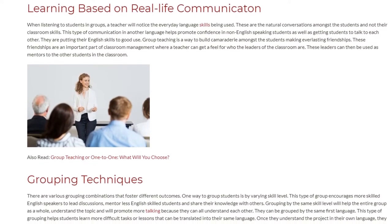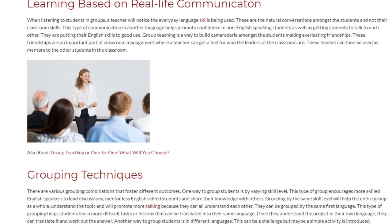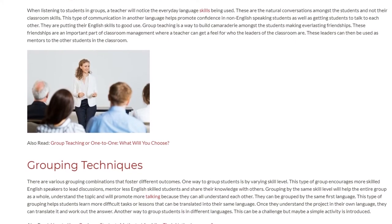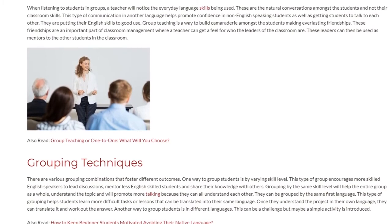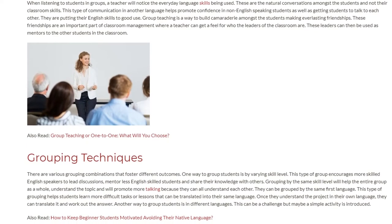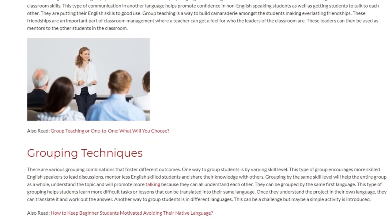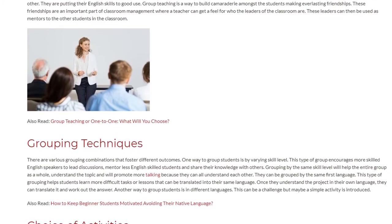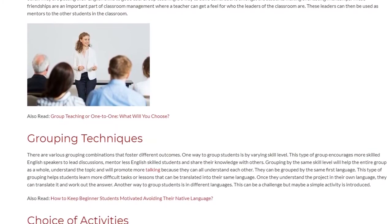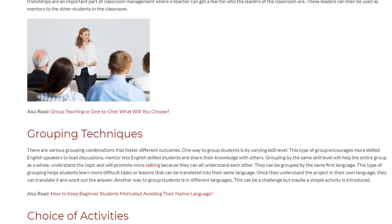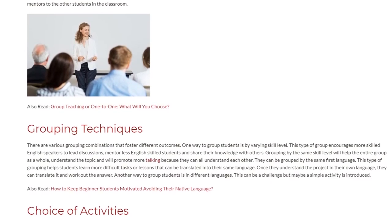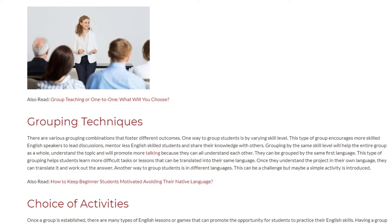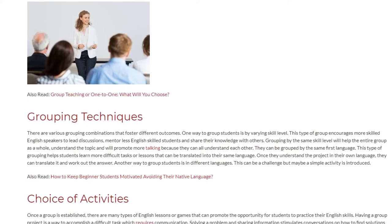There are various grouping combinations that foster different outcomes. One way to group students is by varying skill level. This type of group encourages more skilled English speakers to lead discussions, mentor less skilled students, and share their knowledge with others. Grouping by the same skill level will help the entire group as a whole understand the topic and will promote more talking because they can all understand each other.